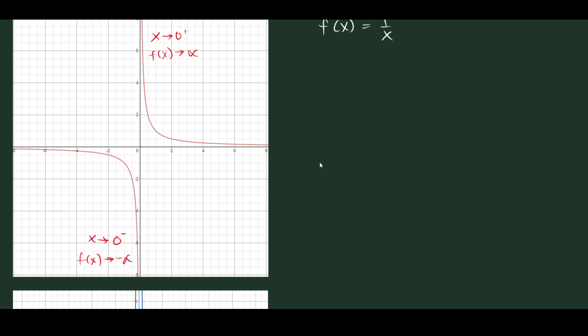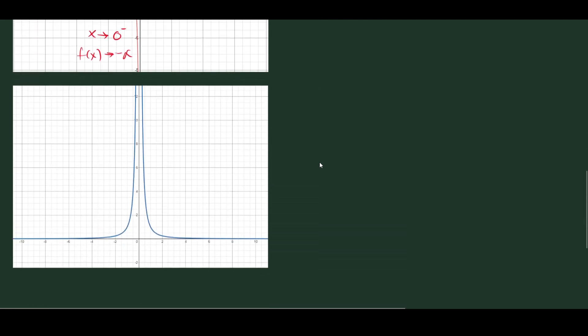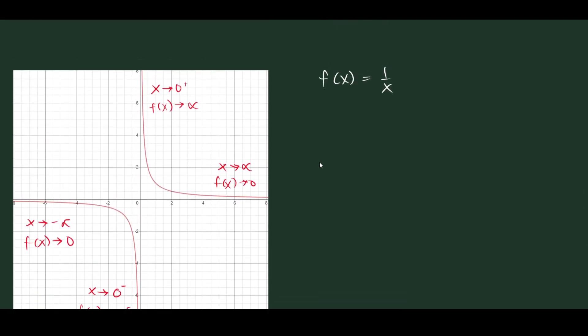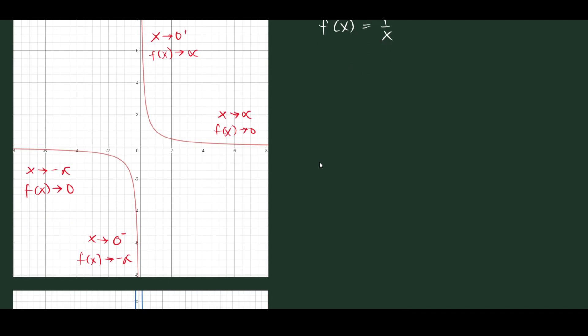And what about here? As x approaches positive infinity, f(x) approaches 0. And on the left side, as x approaches negative infinity, f(x) also approaches 0. So that's how 1/x behaves. It's very different from the functions that we've been graphing before.